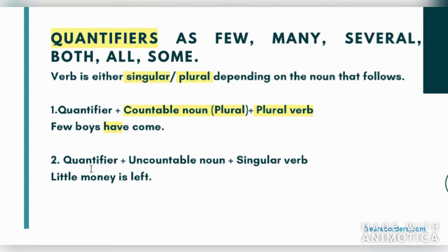Moving on, if you have a quantifier with an uncountable noun — a noun you can't give numbering to — you measure them in different units. For example, money is uncountable because it is measured in rupees; sugar is uncountable because it is measured in kilograms. You can't say '1 sugar, 2 sugar.' An uncountable noun is always treated as singular. So 'Little money is left,' 'Some money is left' — whatever you put, it will always be singular.